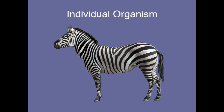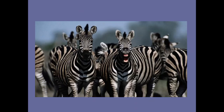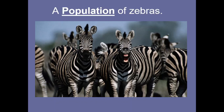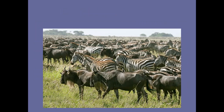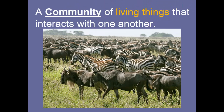An individual organism — here's a zebra. By itself it's just an organism. But if you put a bunch of them together, you have a population. And if you put some populations together — so here we've got zebra and we've got wildebeest — those are called a community. You could even say the grass is a population if it's all one kind of grass, because it's a living thing.